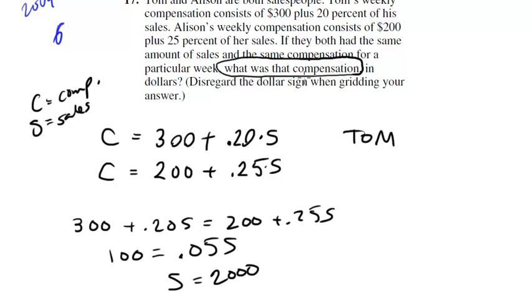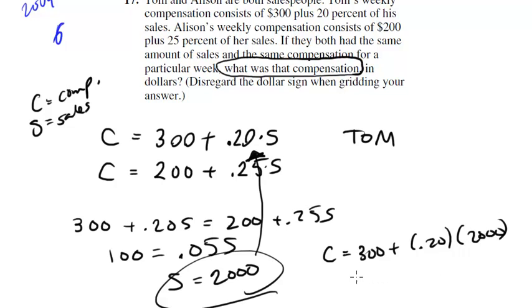Now don't grid 2,000 in, because they don't want the sales. They want the compensation. So again, we're going to take this and plug it into either one. We'll plug it into this guy. So for Tom, it's going to be 300 plus 0.20 times 2,000, which is 300 plus this is 400, not 4,000. And therefore, it's going to be equal to 700. So the answer to this one is 700. And you go ahead and grid that in.